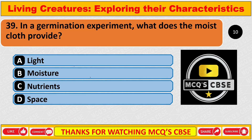In a germination experiment, what does the moist cloth provide? The correct answer is B: Moisture.